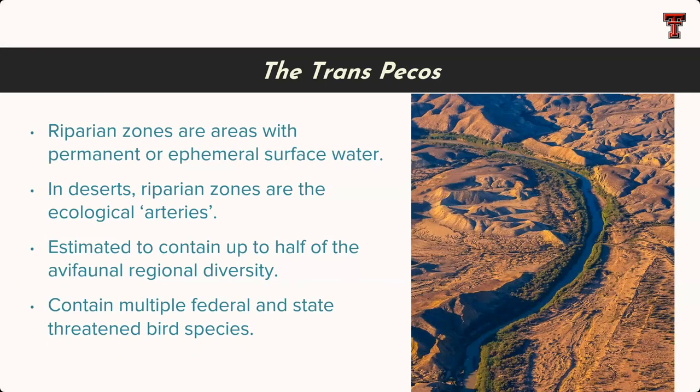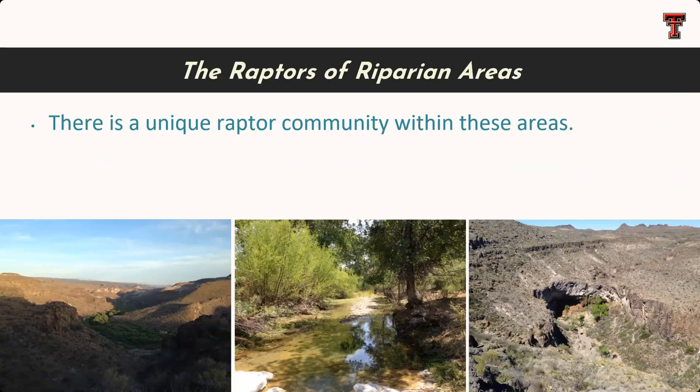Within these areas, the riparian zones are those areas with either permanent or ephemeral surface water. They are widely considered as arteries within these desert systems. It's estimated they contain up to half of the avifauna. Here in the Trans-Pecos, they contain multiple federal and state-threatened bird species. And within this, there's a unique raptor community.